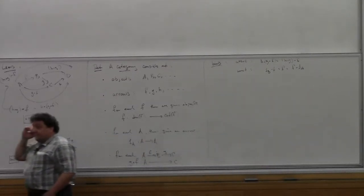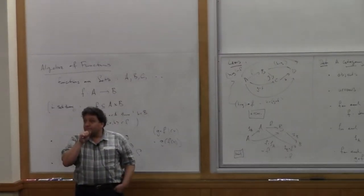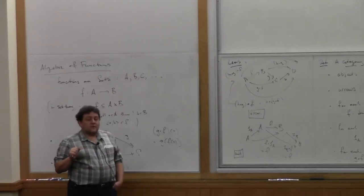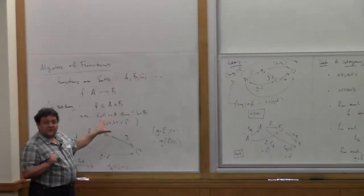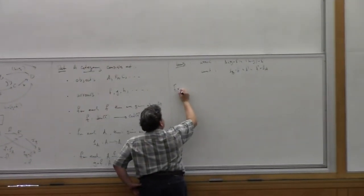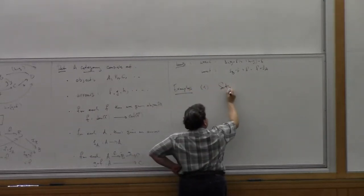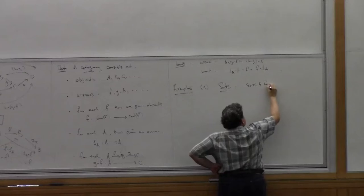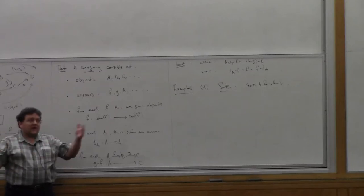The definition captures this example as we just checked. Our first example of a category is the category I'll call Sets, which has sets as objects and functions as arrows. Let's have some more examples of categories because there are lots of them — this was just a place to start.